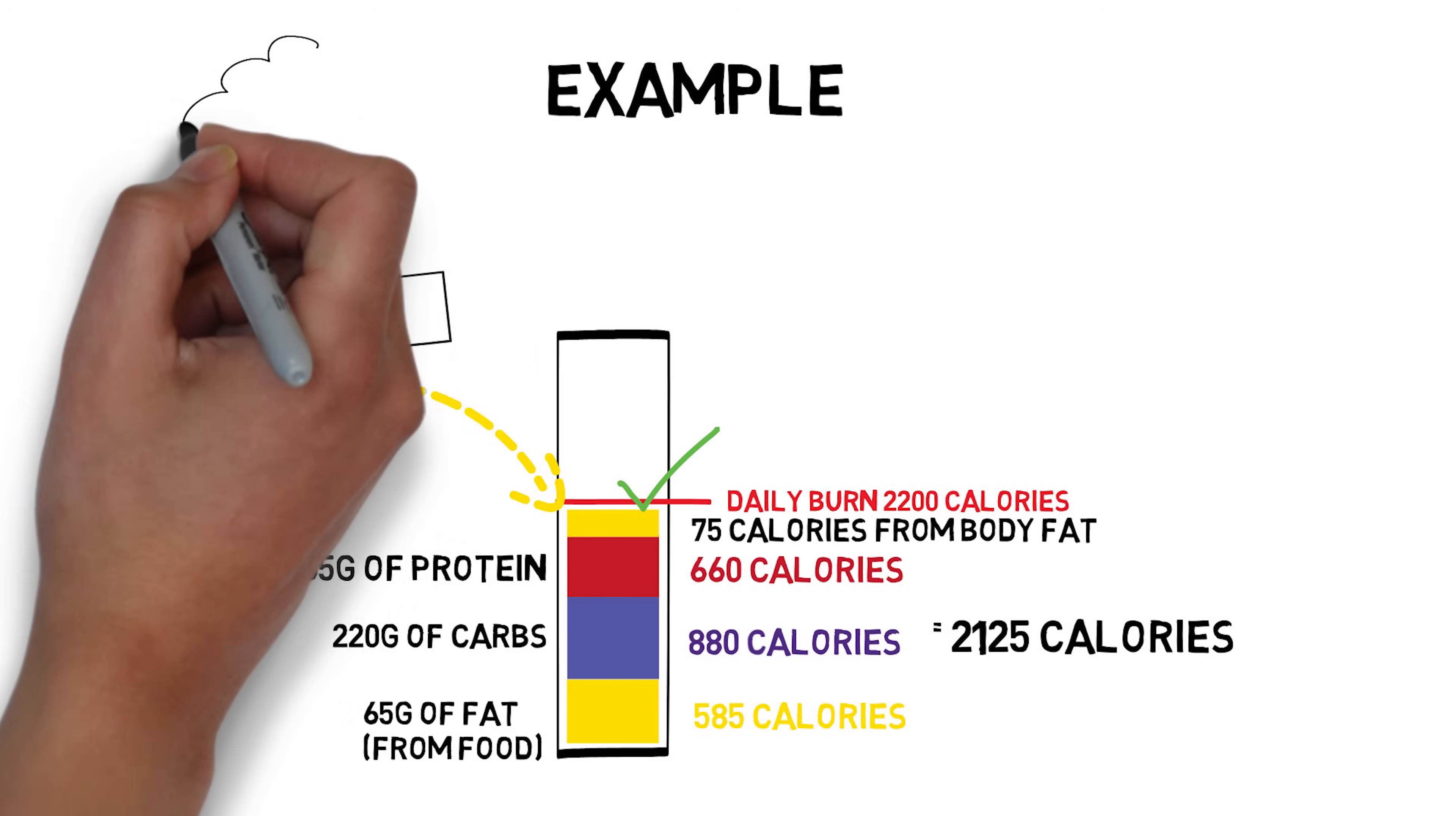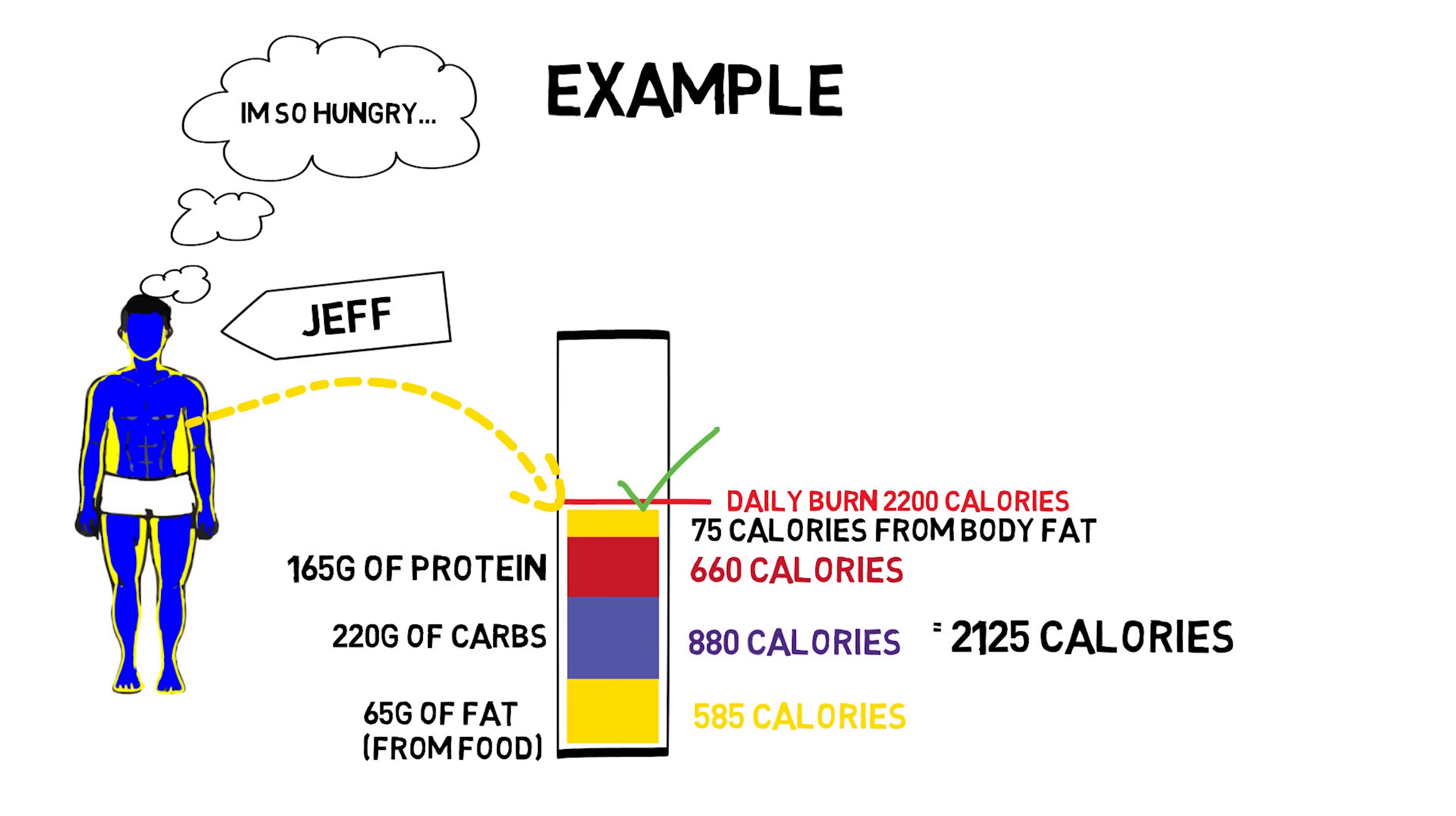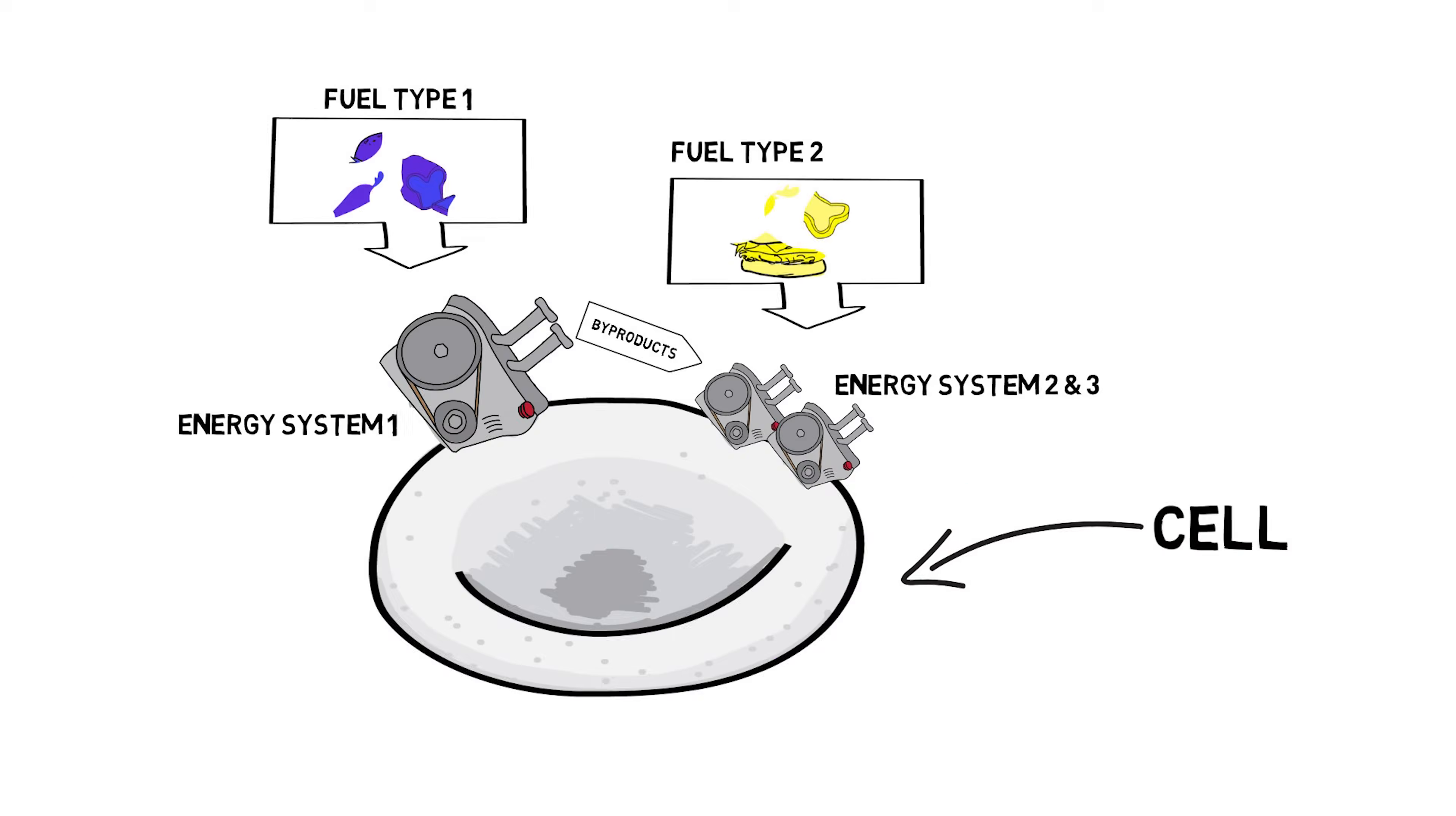The three macronutrients are proteins, fats, and carbs. The cells of the body have different systems to make energy out of these different macronutrients, but because we know how many calories can be made from these different macronutrients, then calculating how many calories you are getting in a day and hitting that deficit becomes as simple as reading the labels and watching the pounds shed off. There is a problem though.